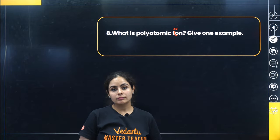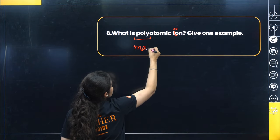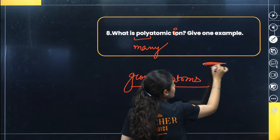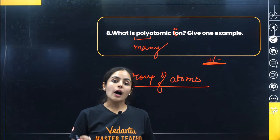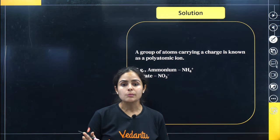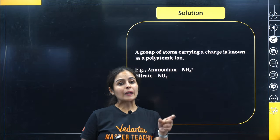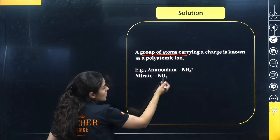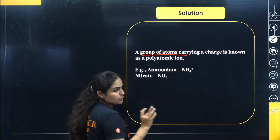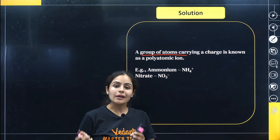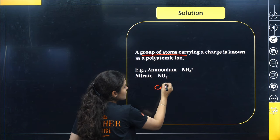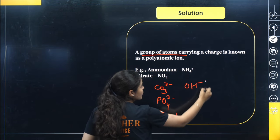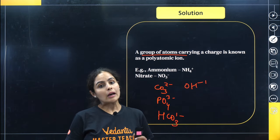Next question: what is a polyatomic ion? Give one example. 'Poly' means many. If a group of atoms carries a common charge — either plus or minus — such ions are called polyatomic ions. Simple ions are monatomic (single atom with a charge). Polyatomic ions are groups of atoms carrying a charge. For example: ammonium NH4+ is a polyatomic ion. Others include nitrate NO3−, carbonate CO3²−, phosphate PO4³−, bicarbonate HCO3−, and hydroxide OH−.